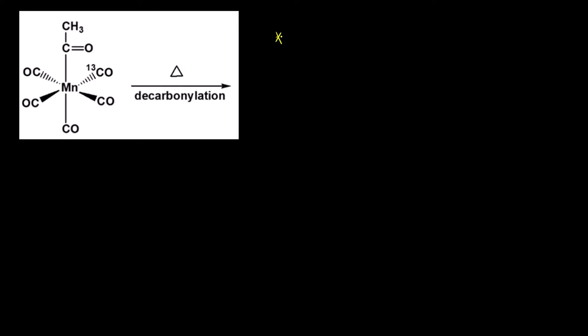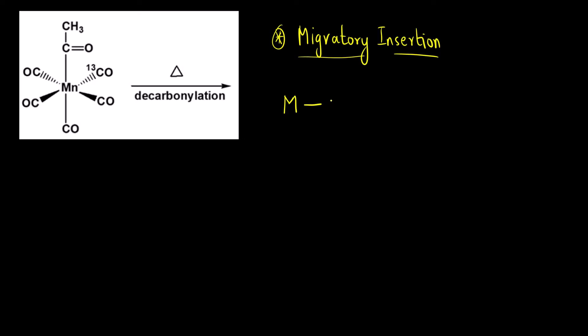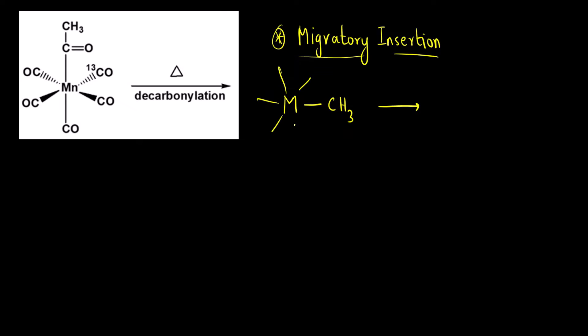Before understanding this reaction, let us first try to understand why exactly this reaction was done. This was based on a name-reaction type of reaction of organometallic compounds called migratory insertion. The most common migratory insertion reaction involves a metal with an alkyl group and carbonyl ligands, either cis or trans, in an octahedral complex.